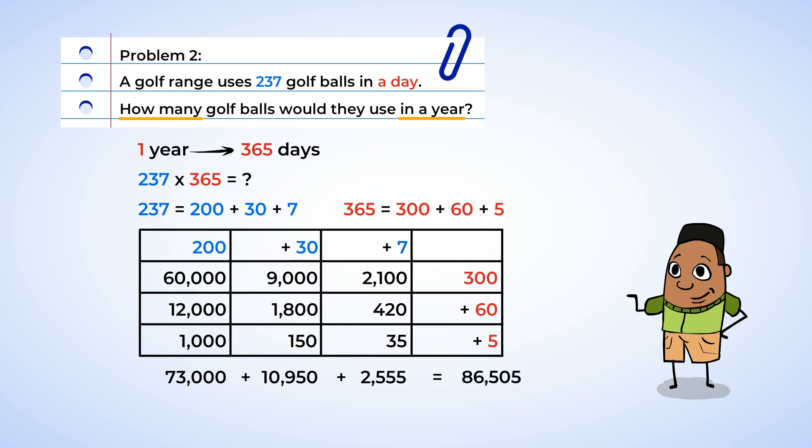And now we can add all these three sums up to get our final answer. We have a final answer of 86,505 golf balls. That is a lot of golf balls.